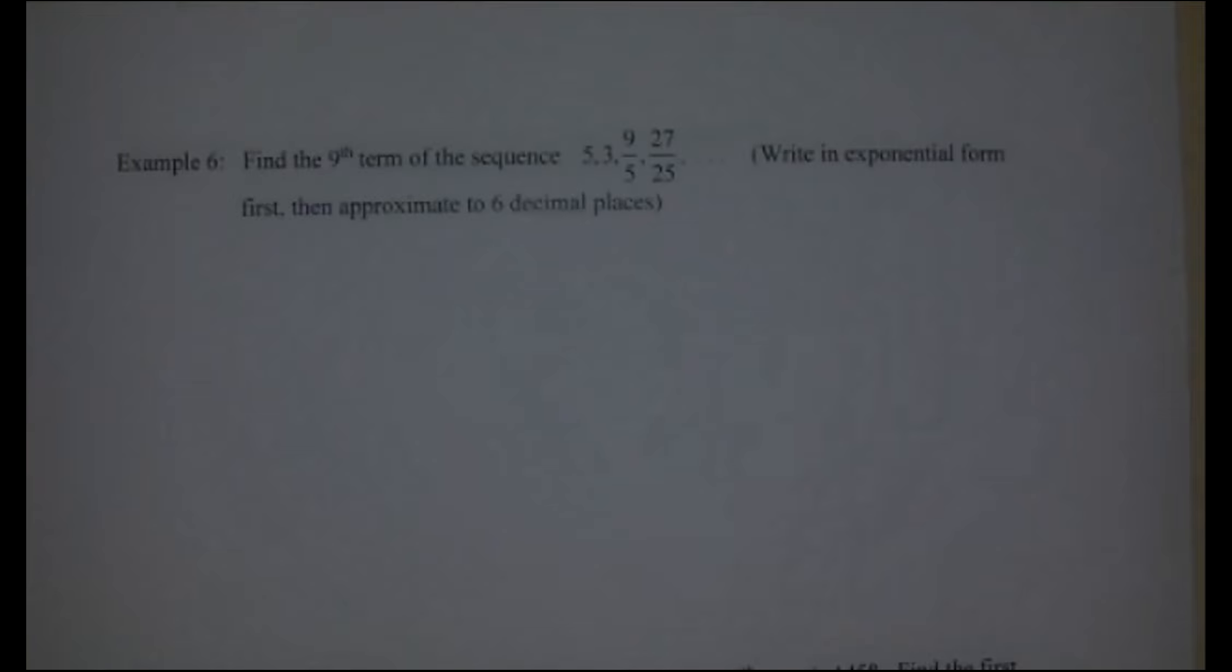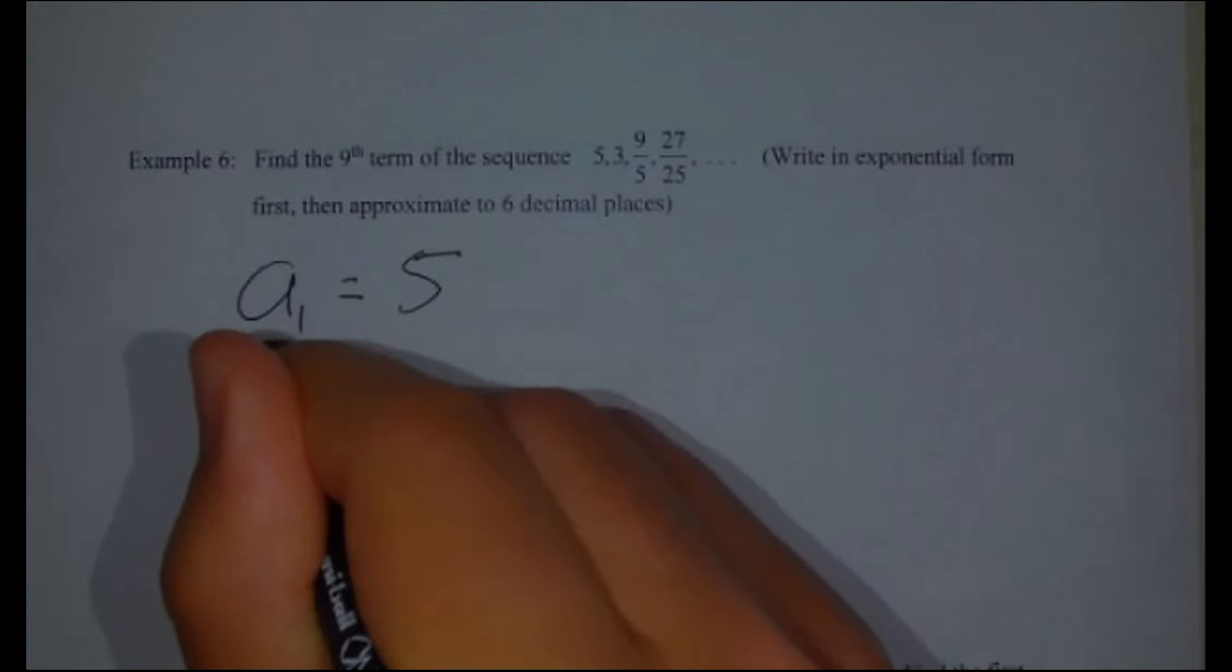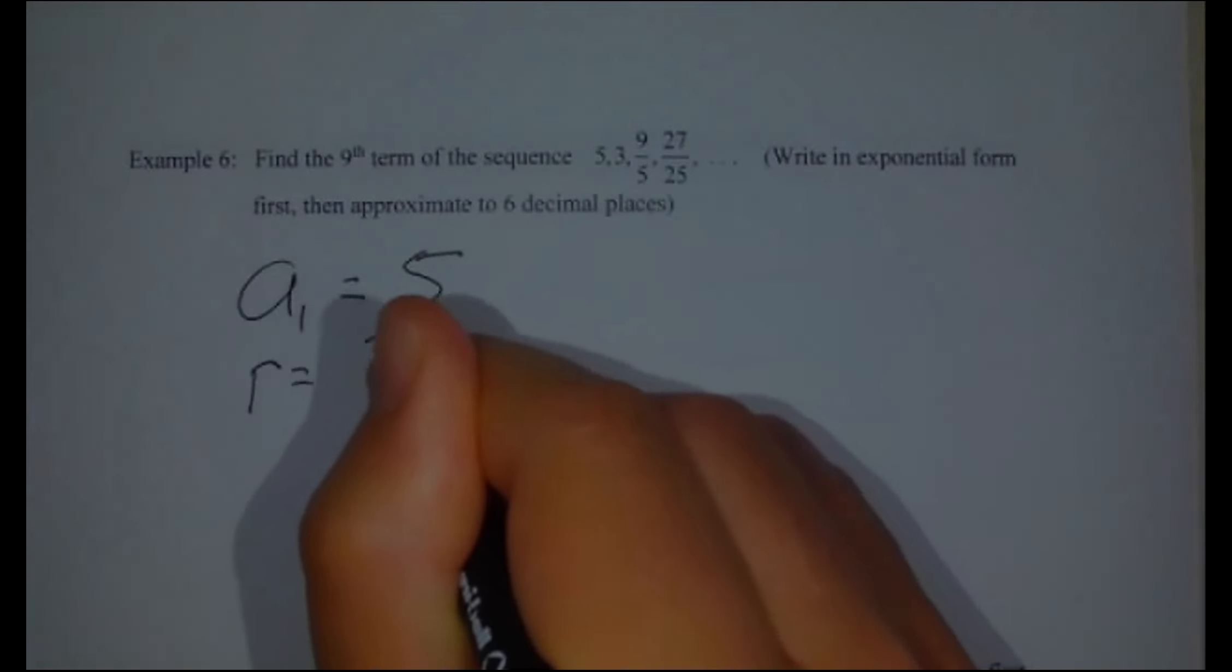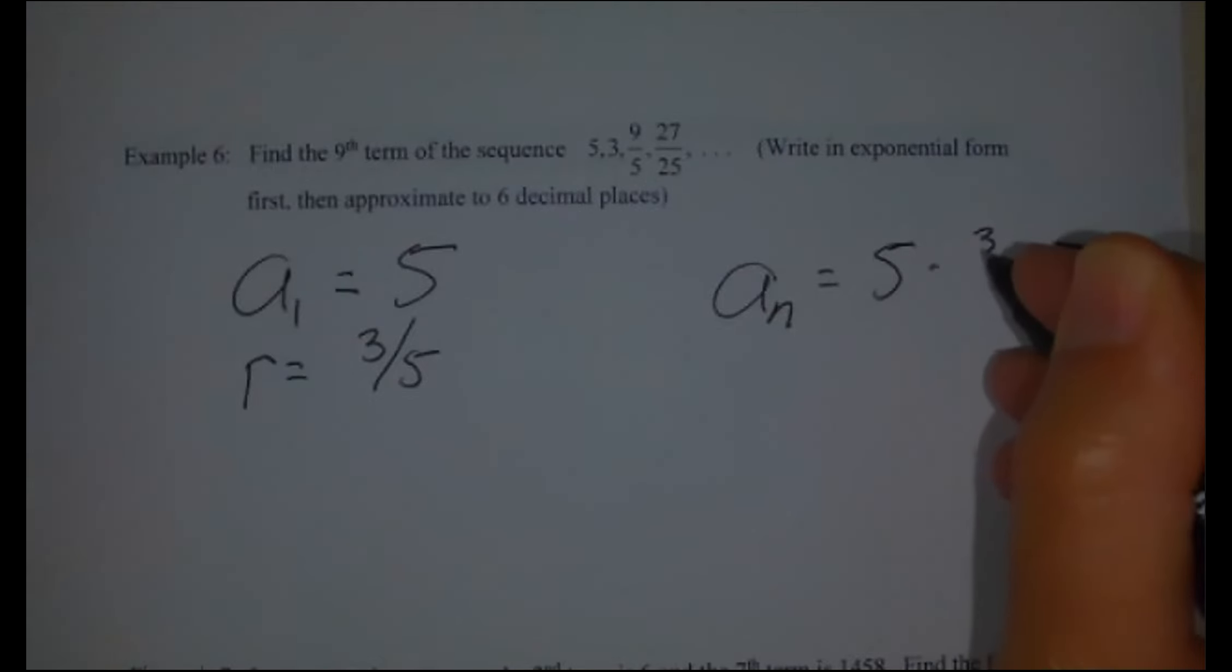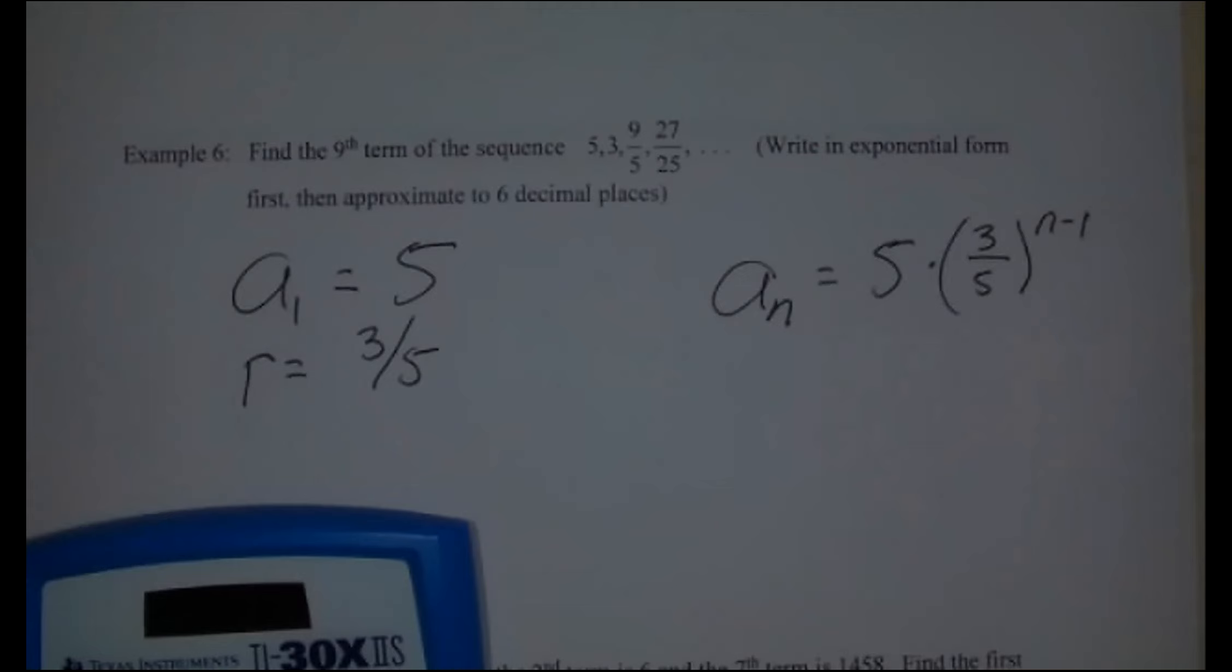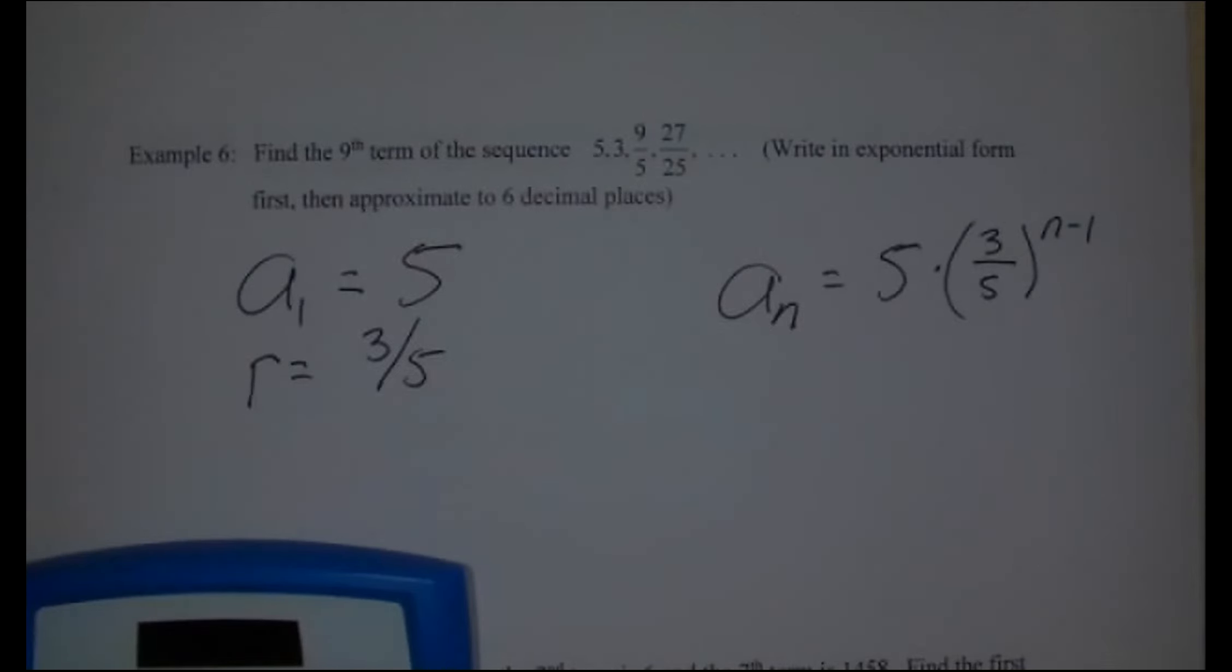Find the ninth term of the sequence, which goes five, three, nine fifths, 27 twenty fifths, etc. So I'm going to write it in exponential form first or write it in explicit form, I should say. A sub one equals five and that ratio appears to be three fifths. So, a sub n should equal five times three fifths to the n minus one. So to find the ninth term, I'm going to employ my calculator here. And I'm going to do three divided by five to the power of, they wanted the ninth term. So I'm going to take it to the eighth power, nine minus one. And I'm going to multiply that by five. And I get about a 0.084-ish. Approximate to six decimal places, they say. Well, there you go.